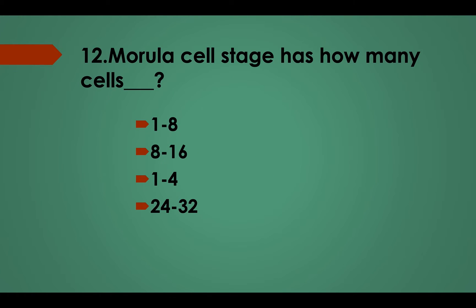Question No. 12: The morula stage has how many cells? Option A, 1 to 8 cells; Option B, 8 to 16 cells; Option C, 1 to 4 cells; Option D, 24 to 32 cells. Correct answer: Option B, 8 to 16 cells.